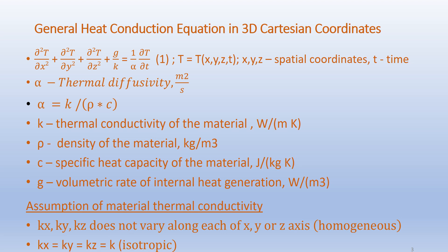Alpha is the material property called thermal diffusivity given in meters squared per second, where α = k/(ρc). Here k is the thermal conductivity of the material in watts per meter Kelvin, ρ is the density of the material in kilograms per meter cubed, c is the specific heat capacity of the material in joules per kilogram Kelvin, and G is the volumetric rate of internal heat generation in watts per meter cubed.